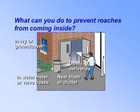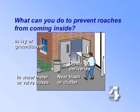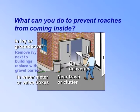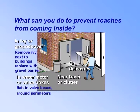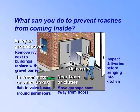What can you do to prevent roaches from coming inside? Remove ivy next to buildings and replace with a gravel barrier. Place baits in valve boxes and around perimeters. Move garbage cans away from doors and other building entrances. Inspect deliveries before bringing them into kitchens. And finally, caulk around windows and doors and use door sweeps.